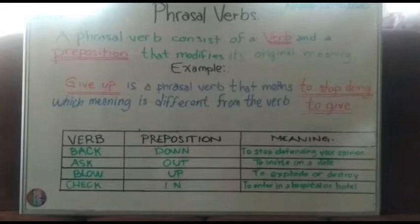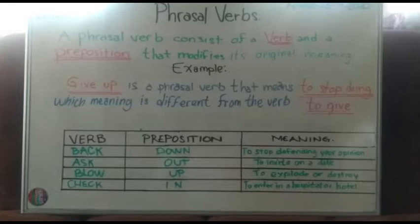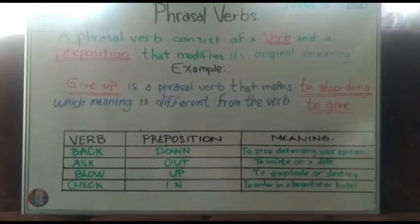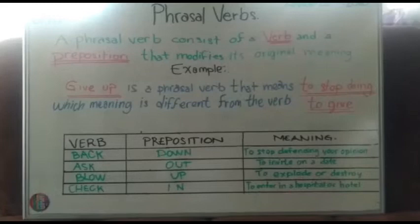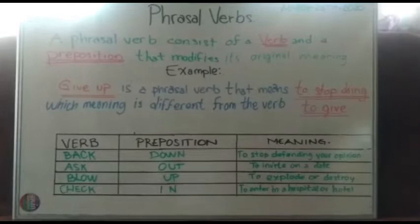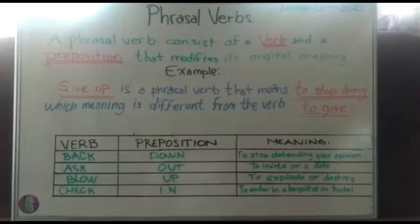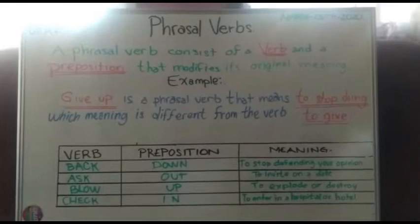For example, a phrasal verb — 'give up' — is a phrasal verb that means to stop doing, which meaning is pretty different from the verb 'to give.' As we can see in that explanation, 'give' is the verb and 'up' is the preposition. 'Give' has its own meaning, 'up' has its own meaning too, but when you combine that verb and preposition, they have a completely different meaning — they mean 'stop doing.'